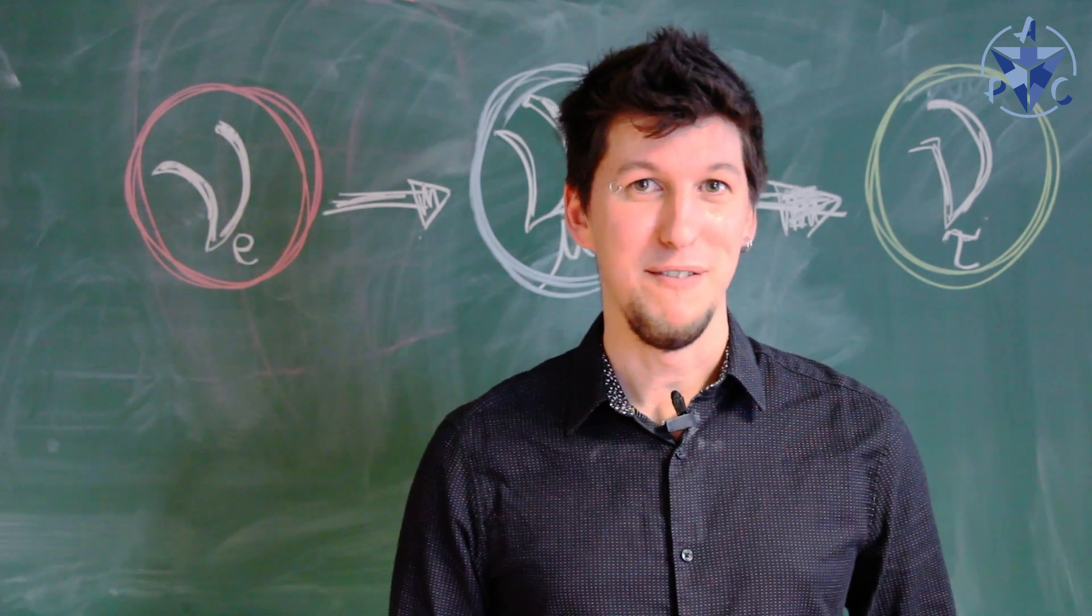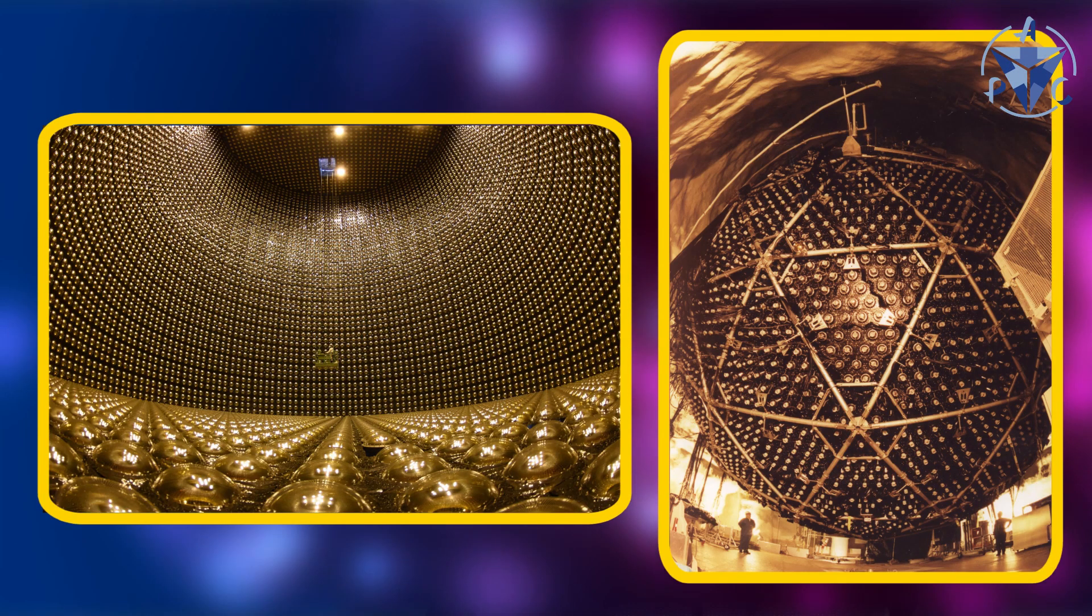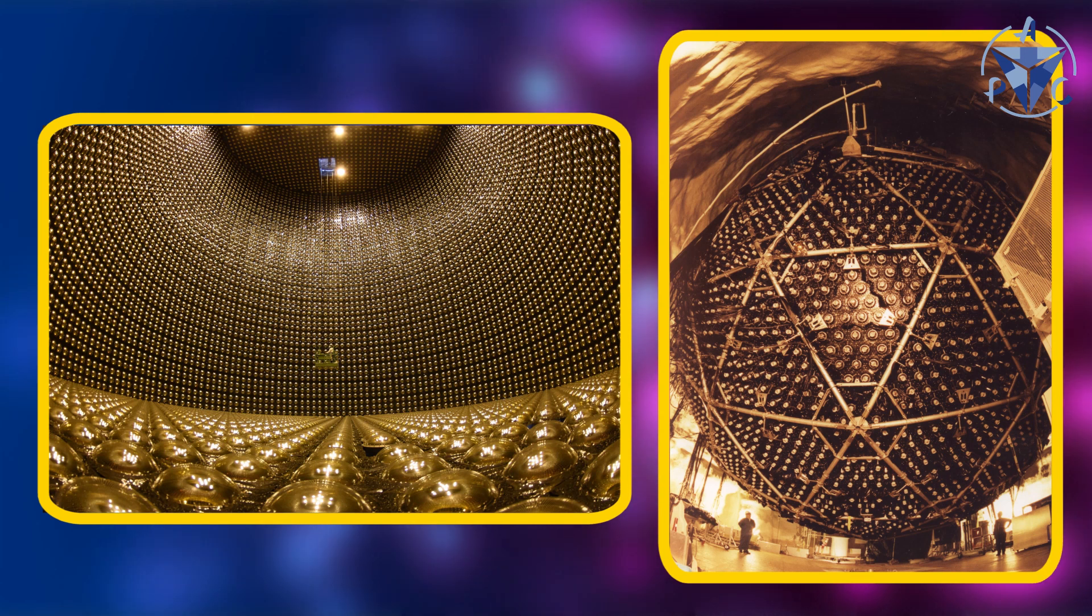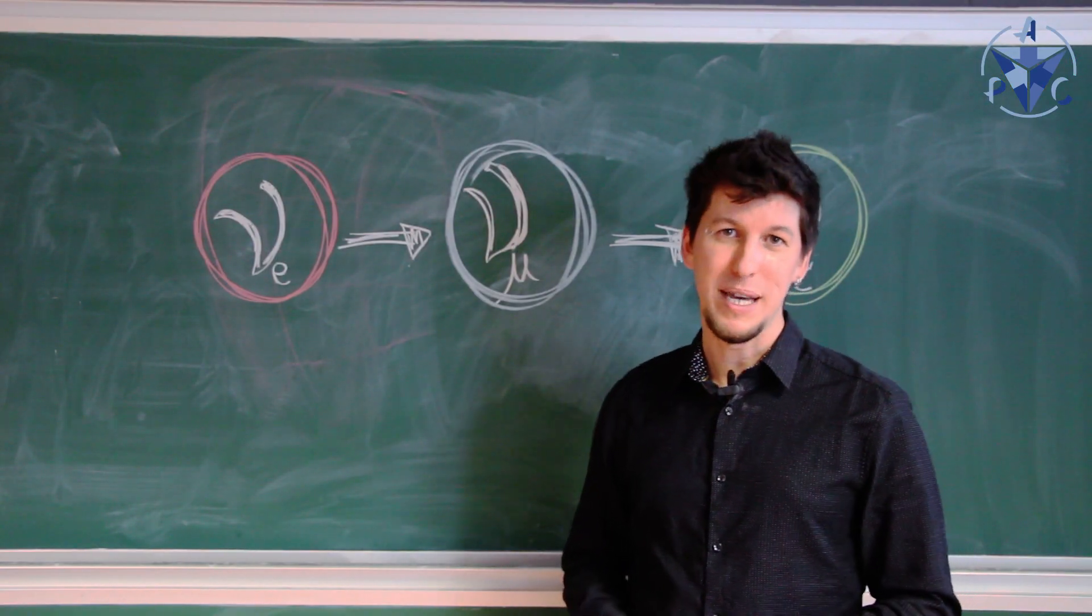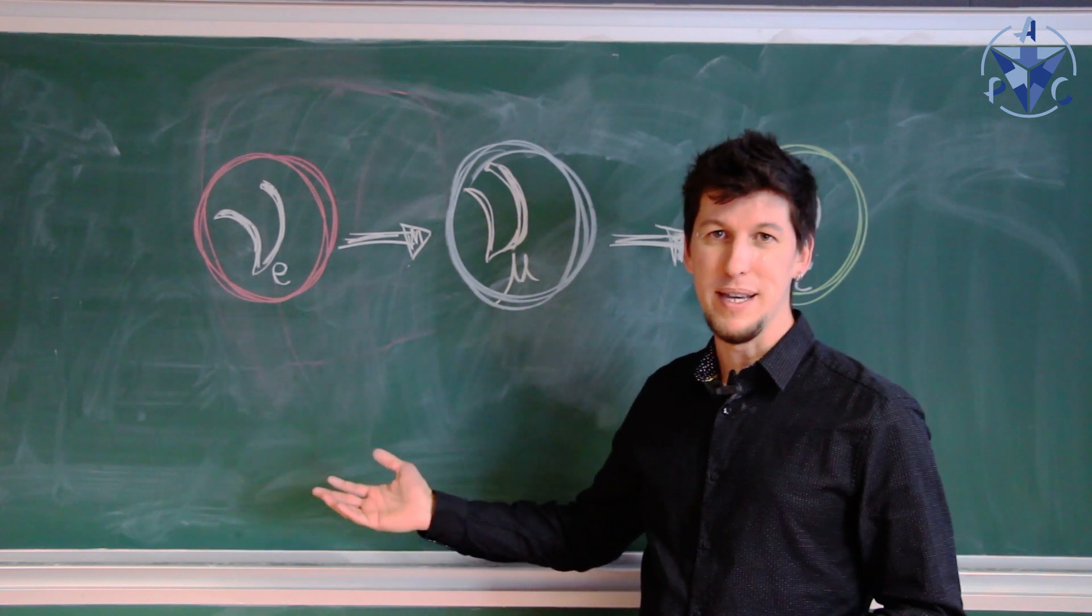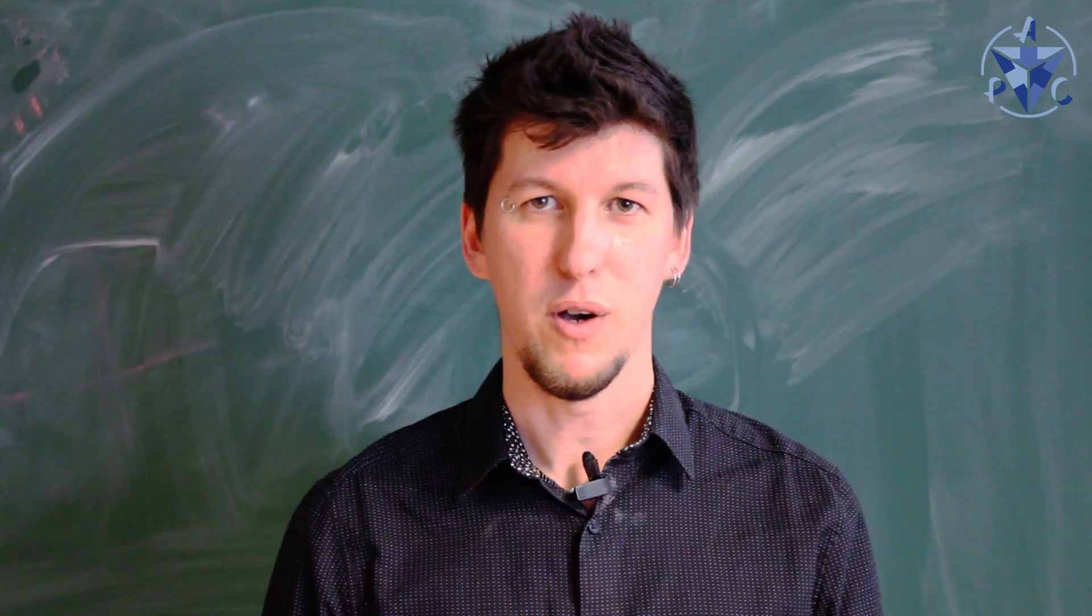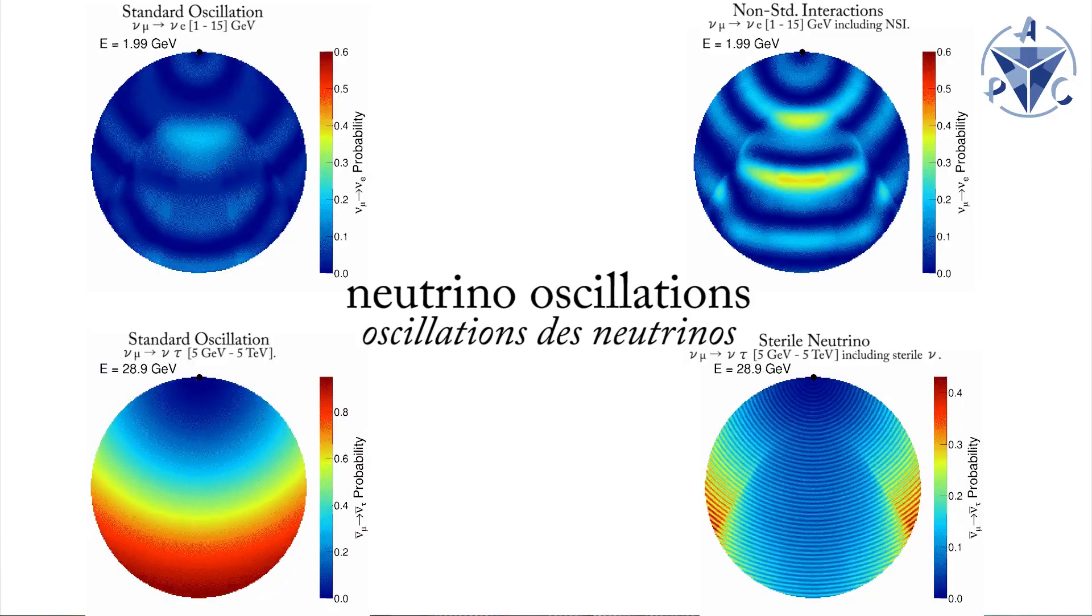But in the 90s, we made a very important discovery. The Super-Kamiokande and SNO experiments showed that neutrinos can change type. For example, a neutrino may start out as an electron neutrino, but as it travels through space, it may become a muon neutrino or a tau neutrino. This is what we call neutrino oscillations and it was revolutionary.